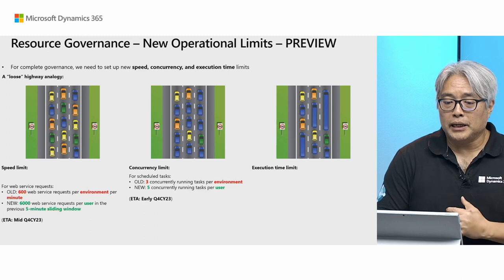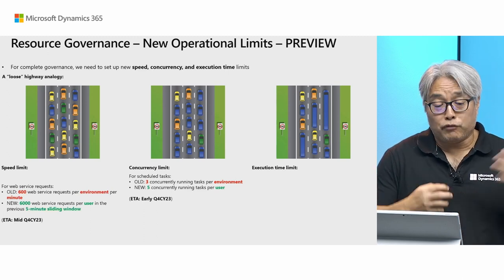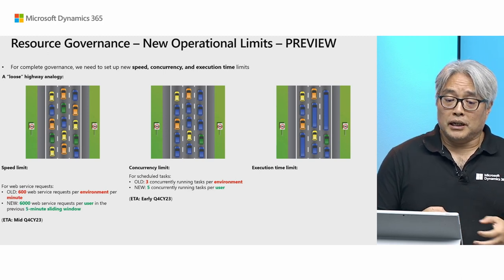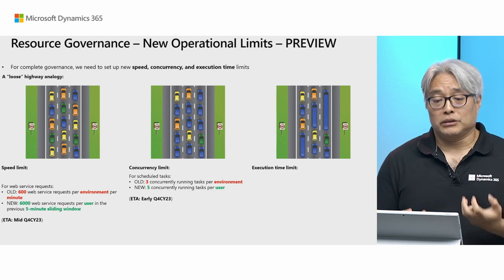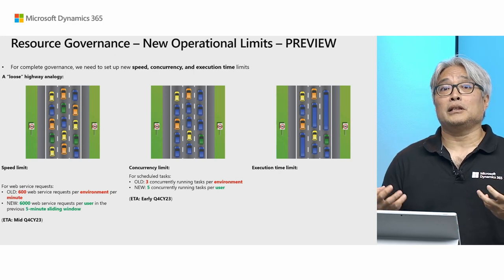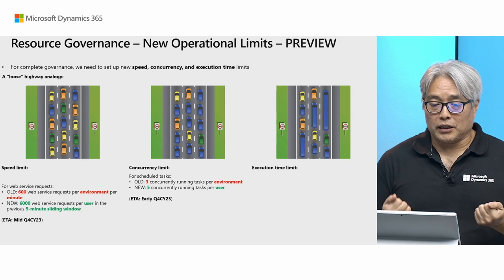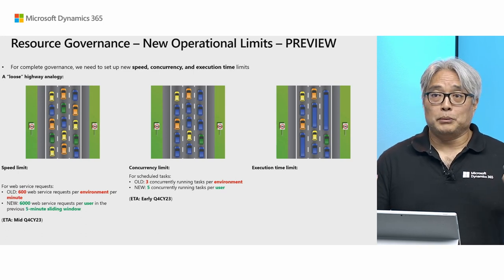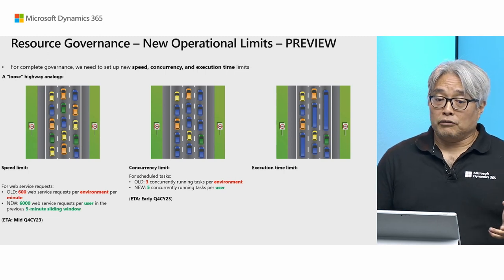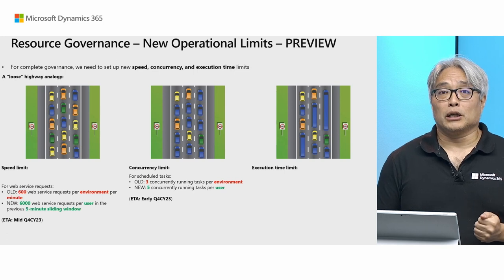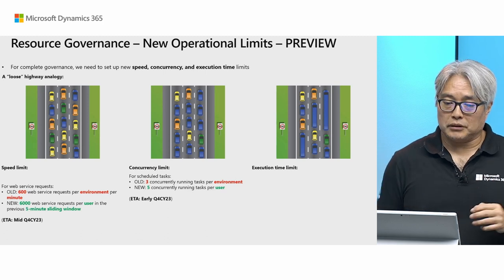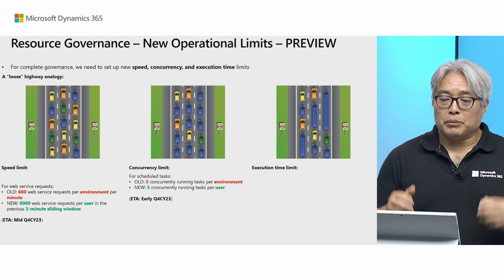The next improvement is changing the speed limit for web service requests from the old 600 requests per environment per minute to 6,000 requests per user in the previous five-minute sliding window. This gives you flexibility to have a burst peak of requests — for example, if you want 6,000 in the first minute, you can do that, as long as across a five-minute sliding window you maintain the number of requests within that period. That is coming in the mid-quarter, around the November–December timeline.